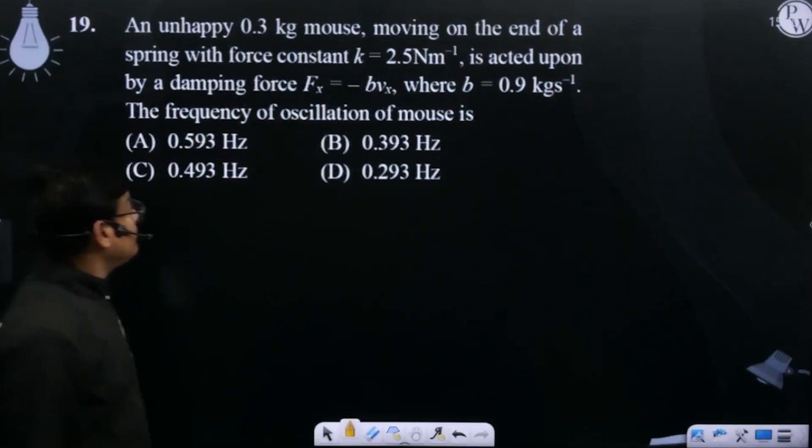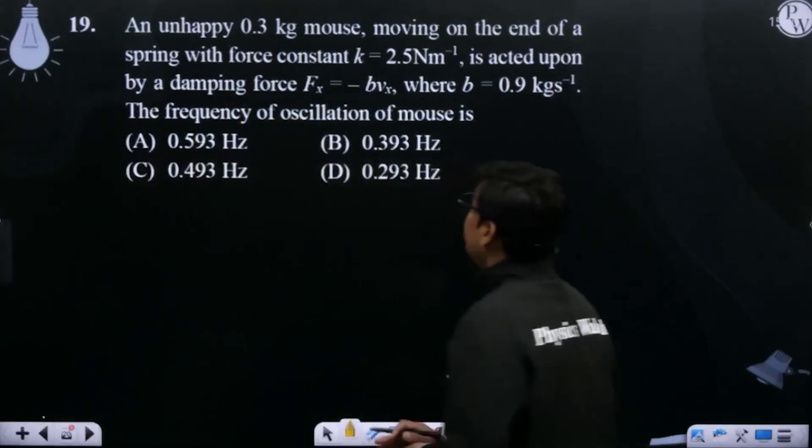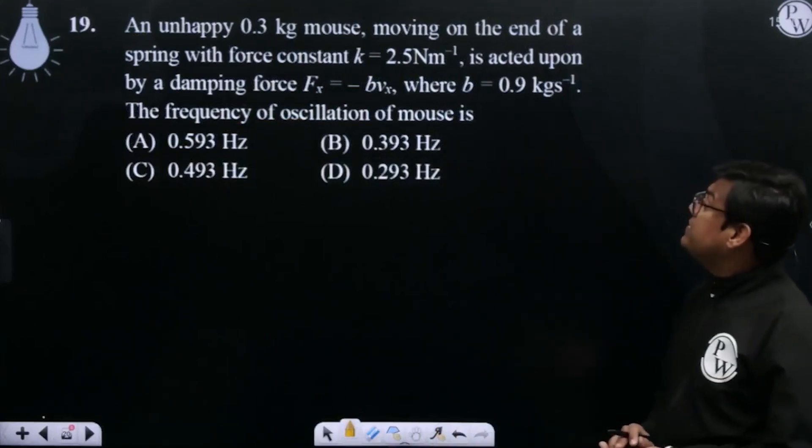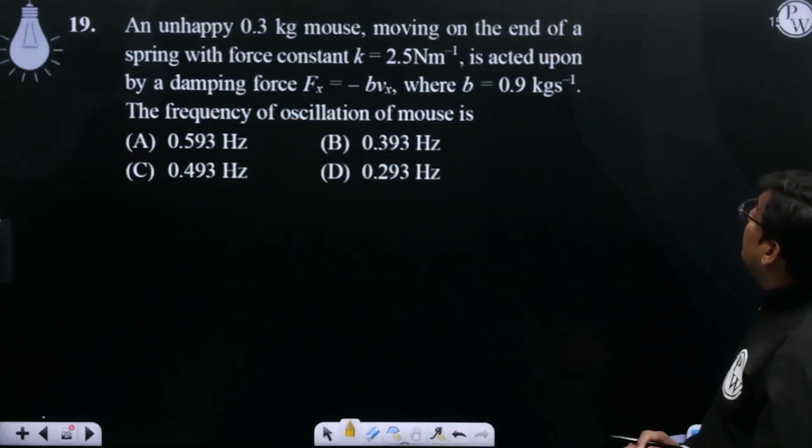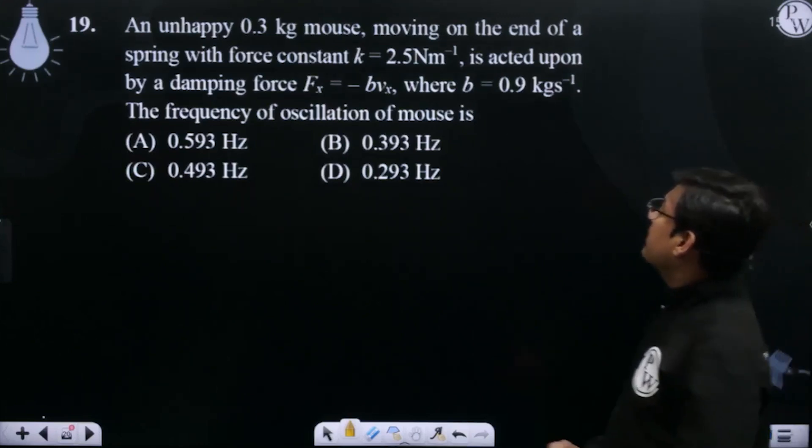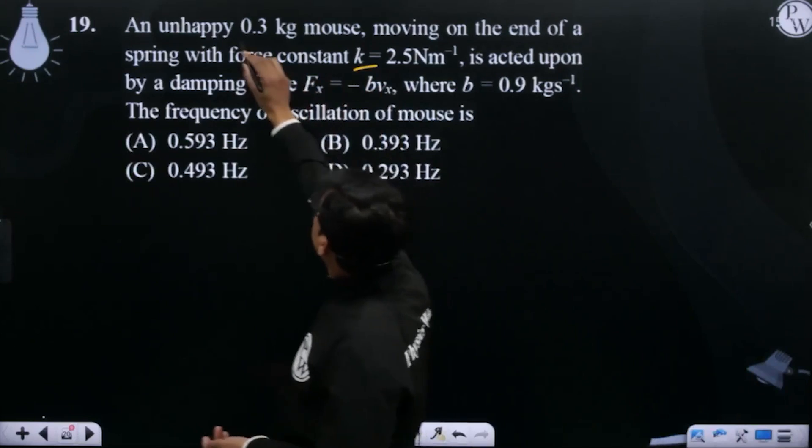Problem number 19: An unhappy 0.3 kg mouse moving on the end of a spring with force constant k and mass given.